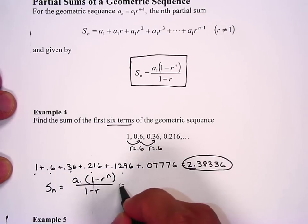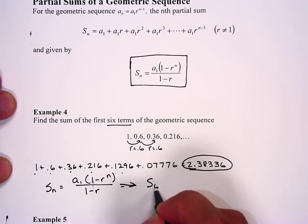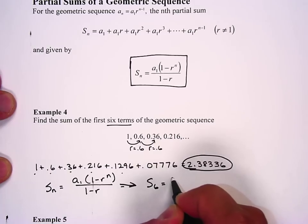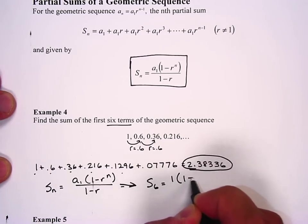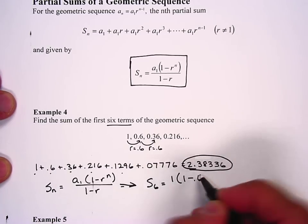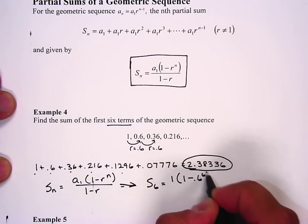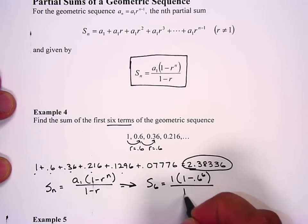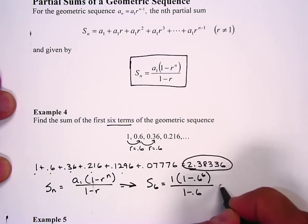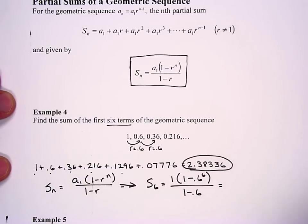If I plug that in to find S sub 6, I know the first term is 1, I know r is 0.6 going to the sixth power, and then I have 1 - 0.6 on the bottom.